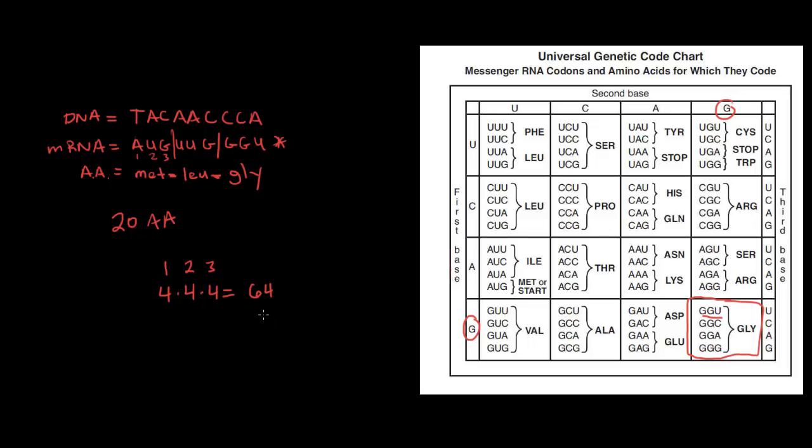Take a look at glycine. GGU, GGC, GGA, and GGG, all of them code for glycine. So there's some redundancy here. That is part of how the genetic code works. It's a little interesting fact about how this works.